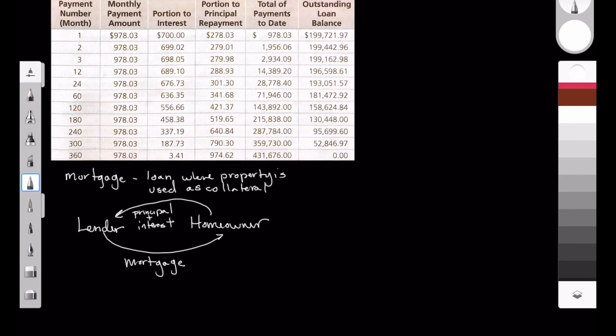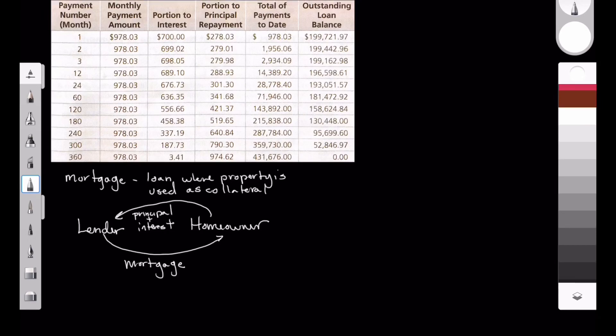the homeowner is going to make what we call principal and interest payments. And this is where it actually is advantageous to the lender because they're counting on the homeowner over a certain period of time, whether it's 10, 15, 20, or 30 years, to pay off this home with interest, which can in many ways, especially on a 30-year loan, almost double the price of the home.